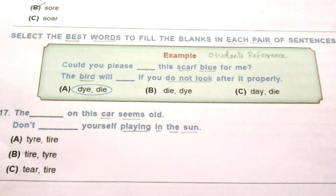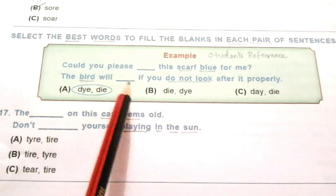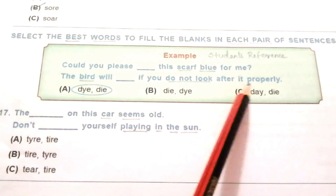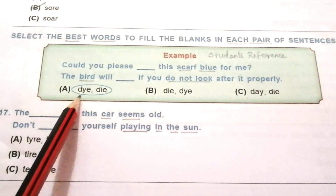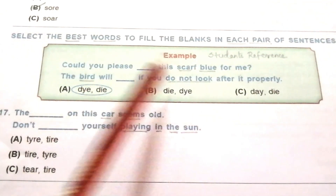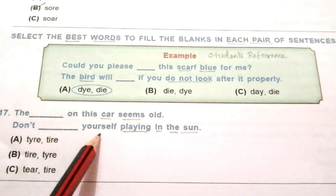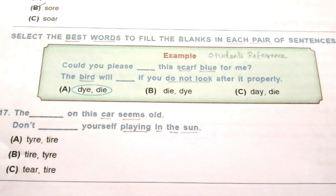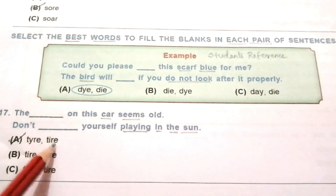Select the best words to fill the blanks in each pair of sentences. Example: would you please blank the scarf blue for me? The board will blank if you do not look after it properly. The answer is A, die / die. D-y-e means colouring the scarf. Question 17: the blank on this car seems old. Don't blank yourself playing in the sun. The answer is A: tyre (T-Y-R-E) / tire (T-I-R-E).